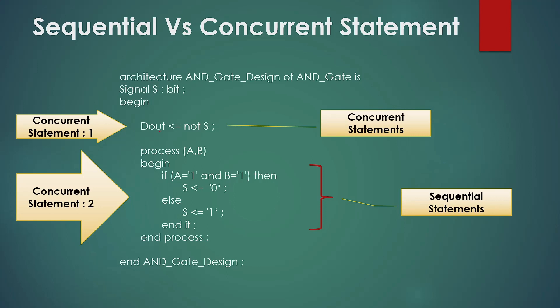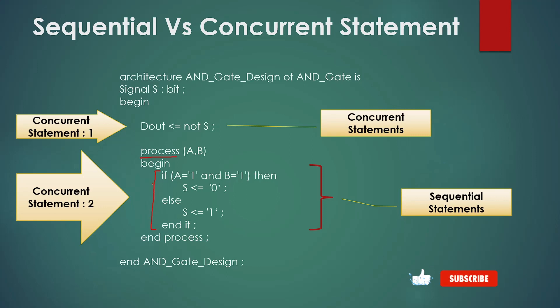Let's explore the area where we used process and written some conditional statements like if-else. These statements inside the process execute sequentially and hence are called sequential statements in VHDL. In this example in VHDL we can write both types of statements — sequential and concurrent — to describe the functionality of our digital system. Interestingly, all the statements inside the process are sequential statements and execute sequentially, but the process statement itself executes concurrently with the other concurrent statements.